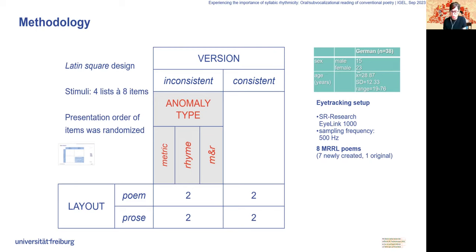The reading time measures were single fixation duration, gaze duration, regression path duration, and total reading times. For all, we computed residual reading times from all the words in the poem. We controlled for lexical, structural, and oculomotor variables, for example, word length or number of syllables.